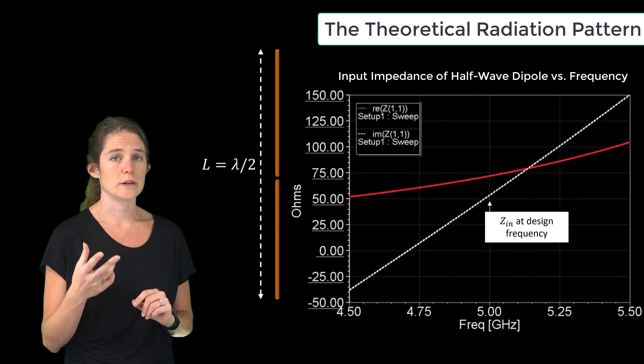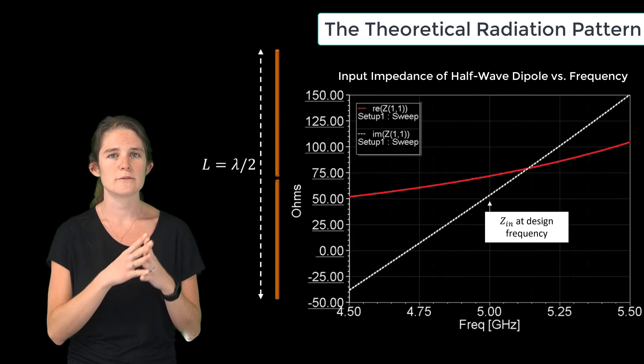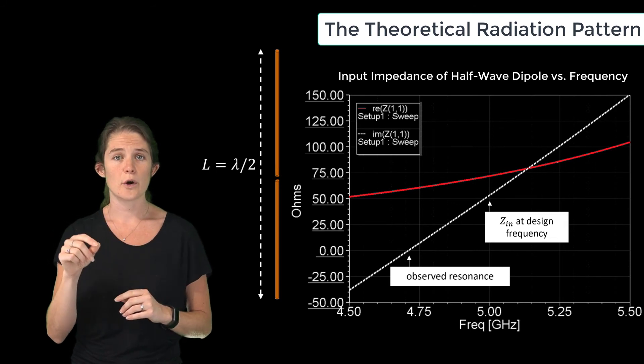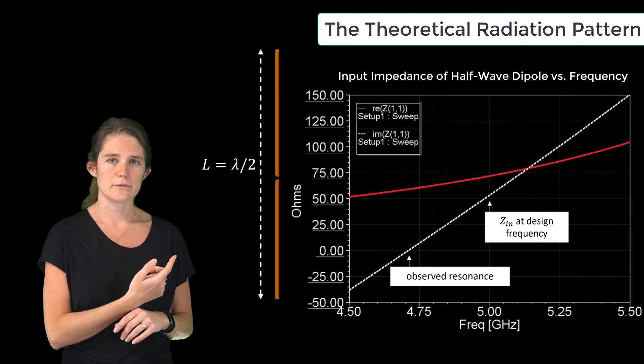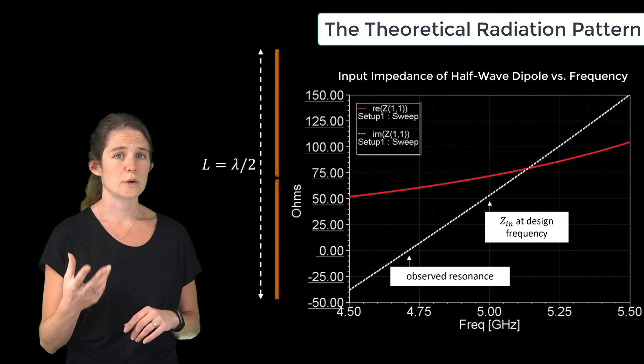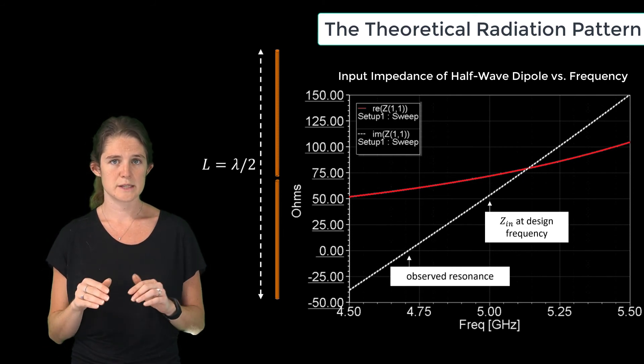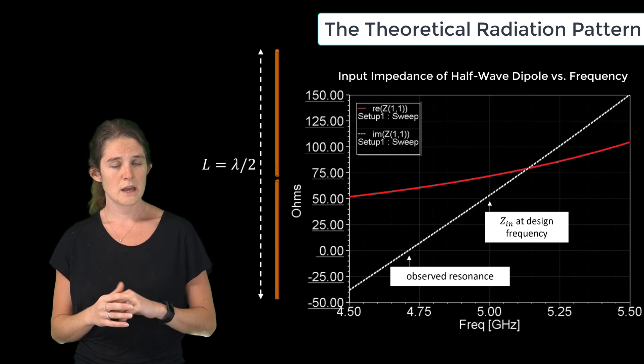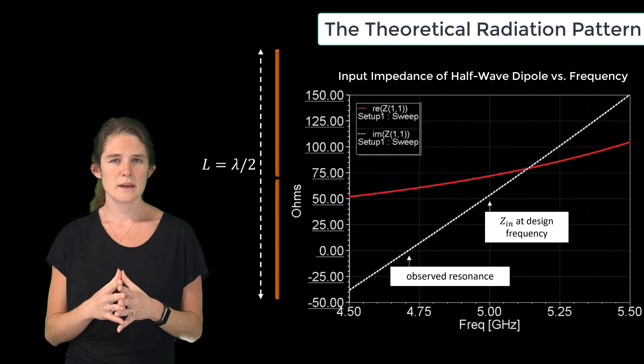We can also observe here that the resonance of this antenna, which is defined by a zero ohm reactance, is actually happening at this slightly lower frequency, and this is where the antenna will actually want to operate. It's also worth noting that at this frequency the real part of the input impedance is lower than 73 ohms and will more closely match a 50 ohm feed line.